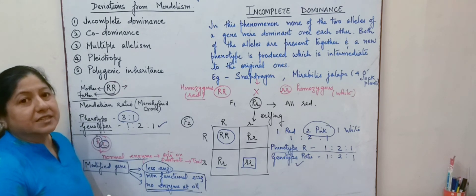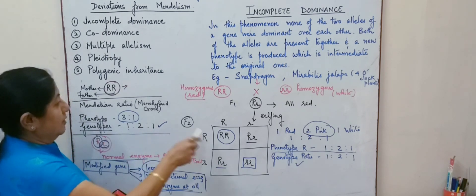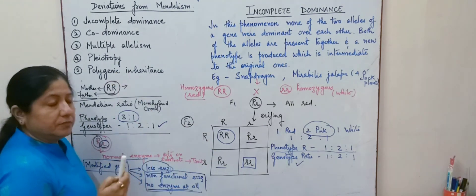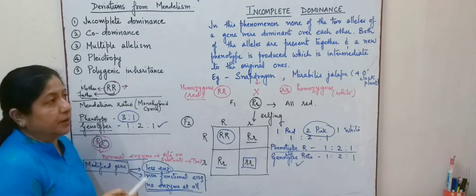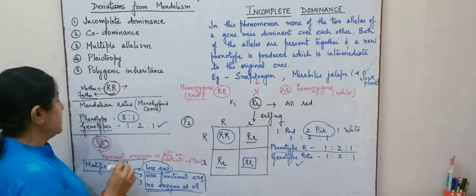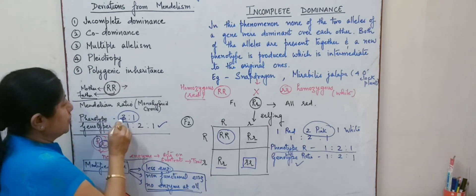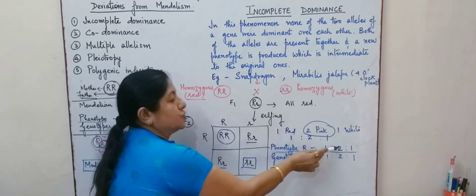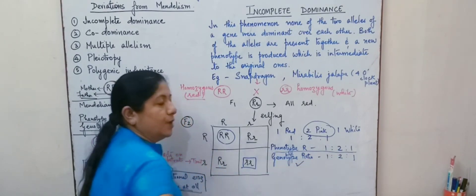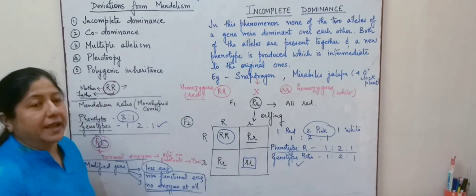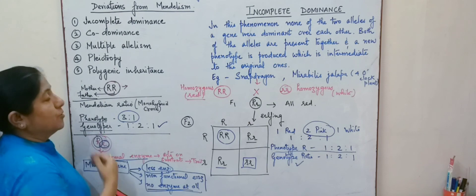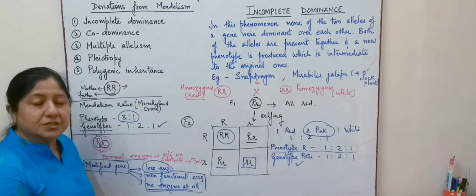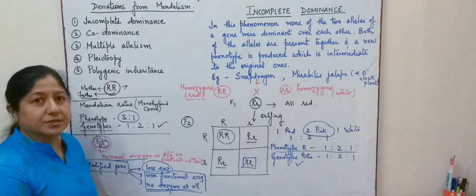Incomplete dominance is a very major deviation from the Mendelian laws, where the phenotype ratio, instead of 3:1, is 1:2:1. We are going to study about the other deviations in our subsequent videos.